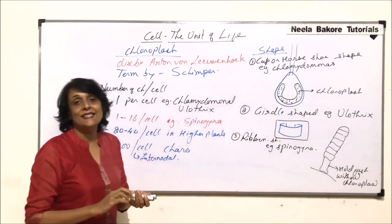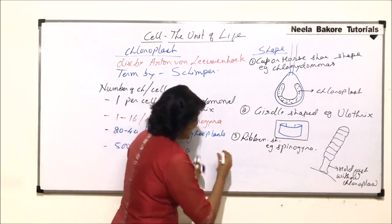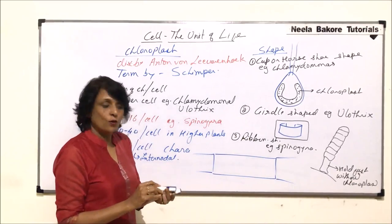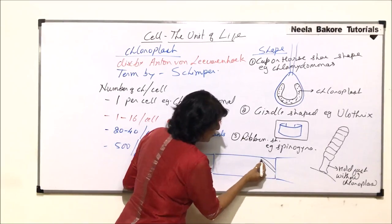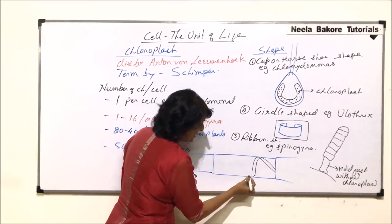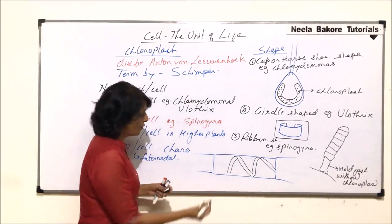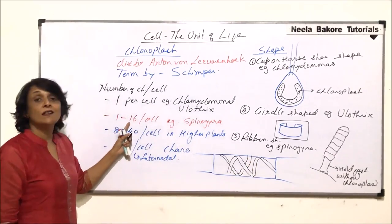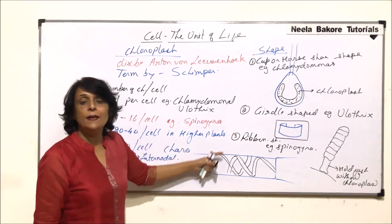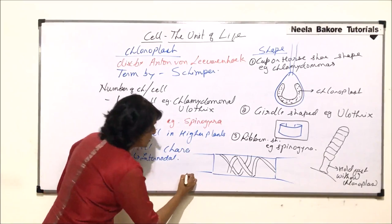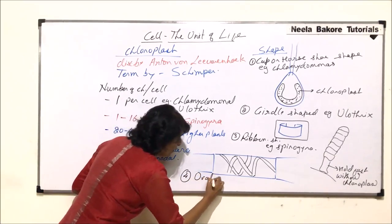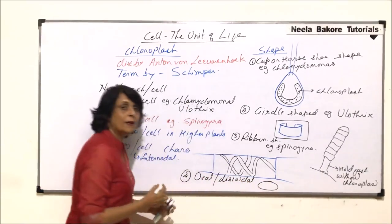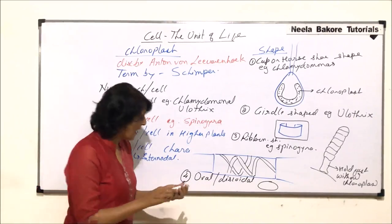In Spirogyra the cells are arranged in the form of a long filament. In each cell the chloroplast is flat and ribbon-like — it takes turns going across the cell. The number of chloroplasts in Spirogyra ranges from 1 to 16 per cell. In higher plants, the fourth shape, the chloroplast is oval or discoidal in shape.